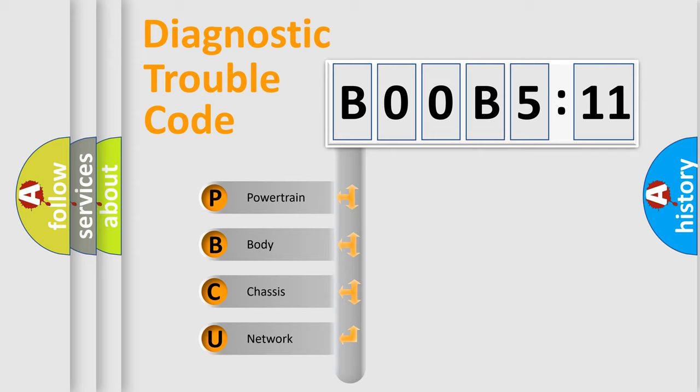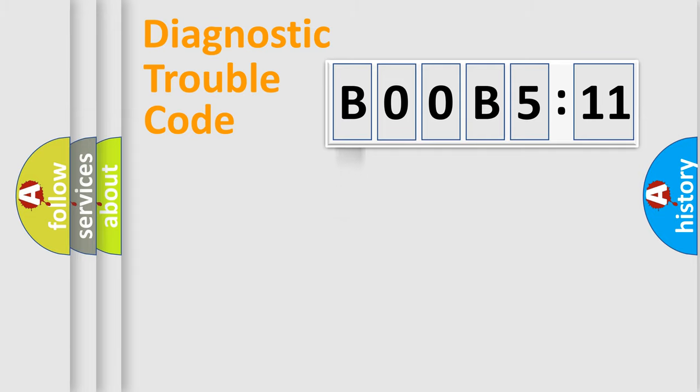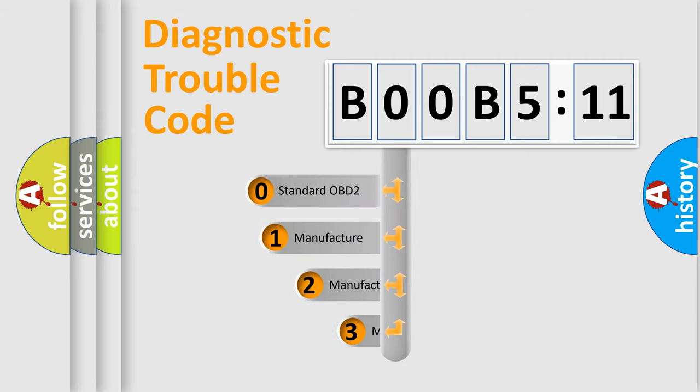We divide the electric system of an automobile into four basic units: powertrain, body, chassis, and network. This distribution is defined in the first character code.